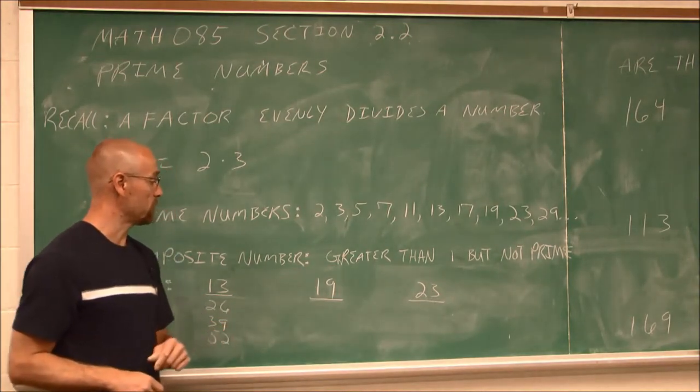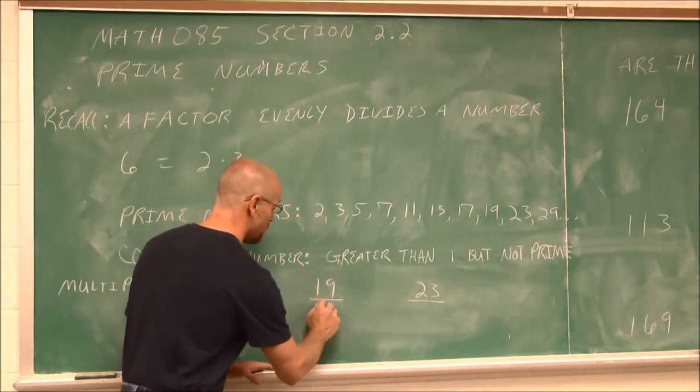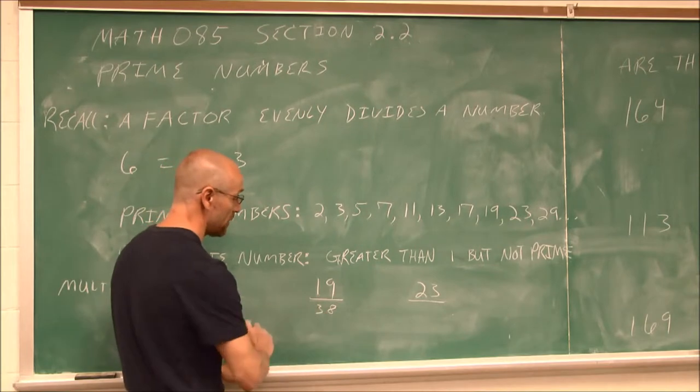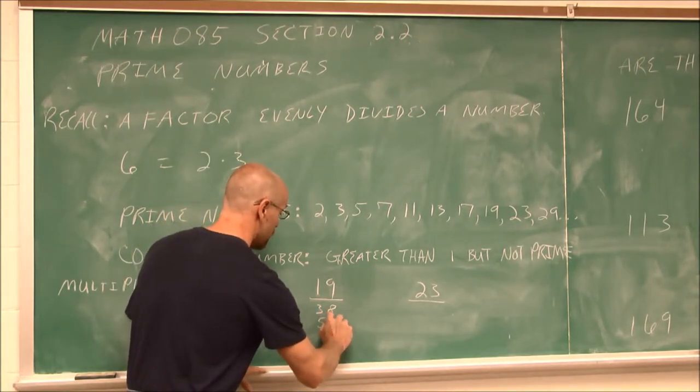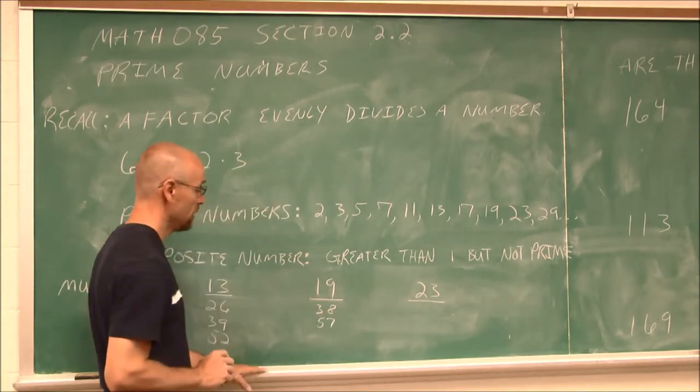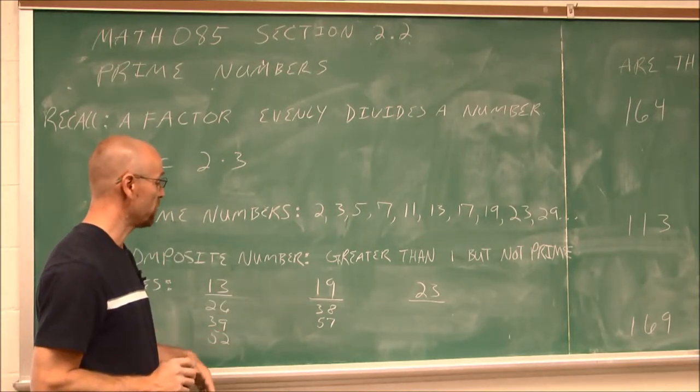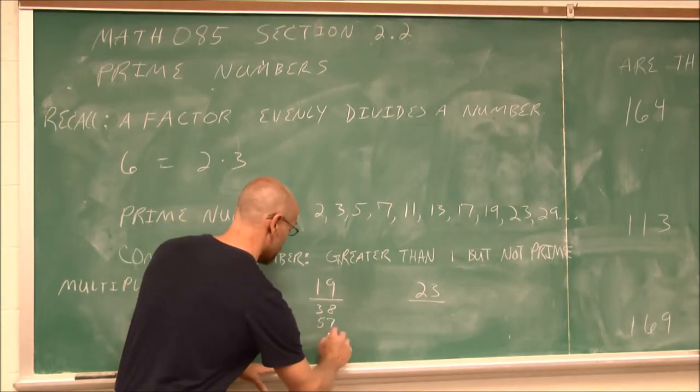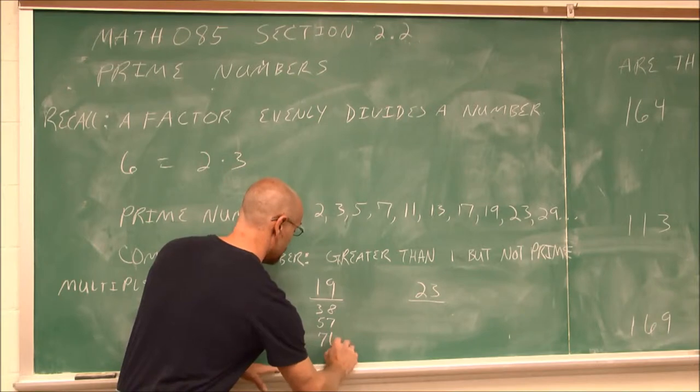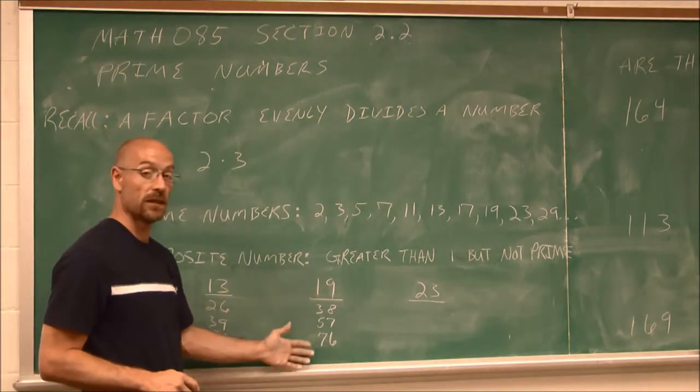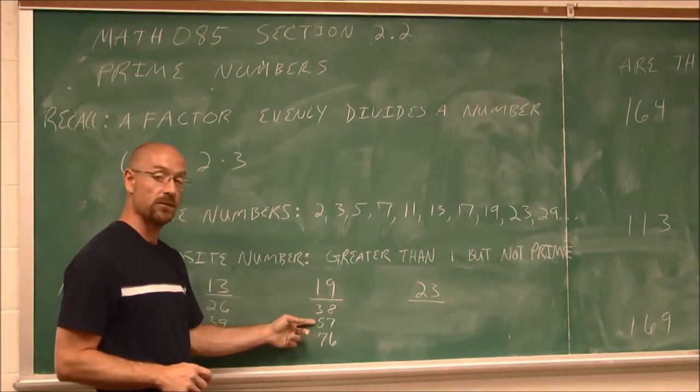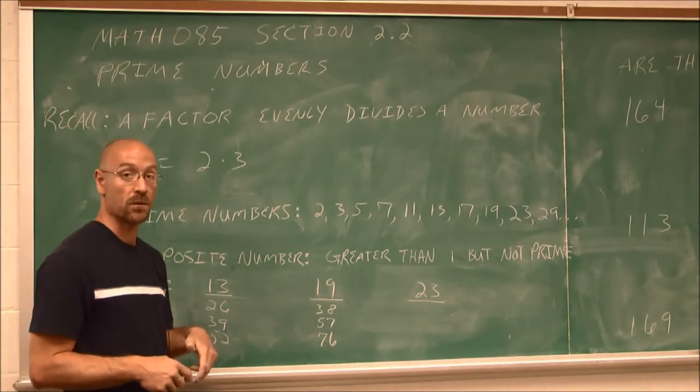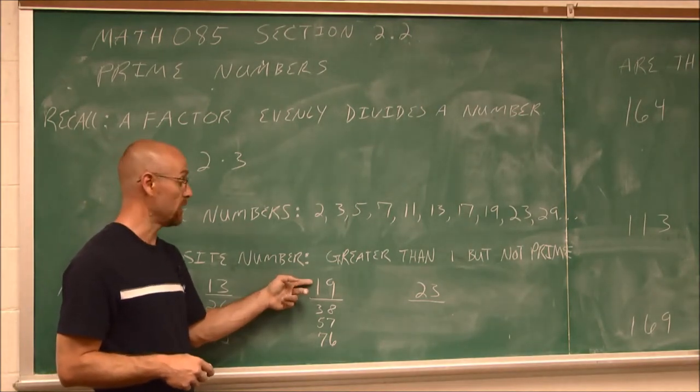Let's list some multiples of 19. Well, this is 19. 19 twice would be 38. 19 3 times, we could just add another 19 to that, is going to be 57. And if we want to multiply that by 4, we would have 76. So sometimes it might be beneficial to list these numbers. If I saw the number 57, initially I might think that might be prime, but we find out that it's actually 3 times 19, a larger prime number.